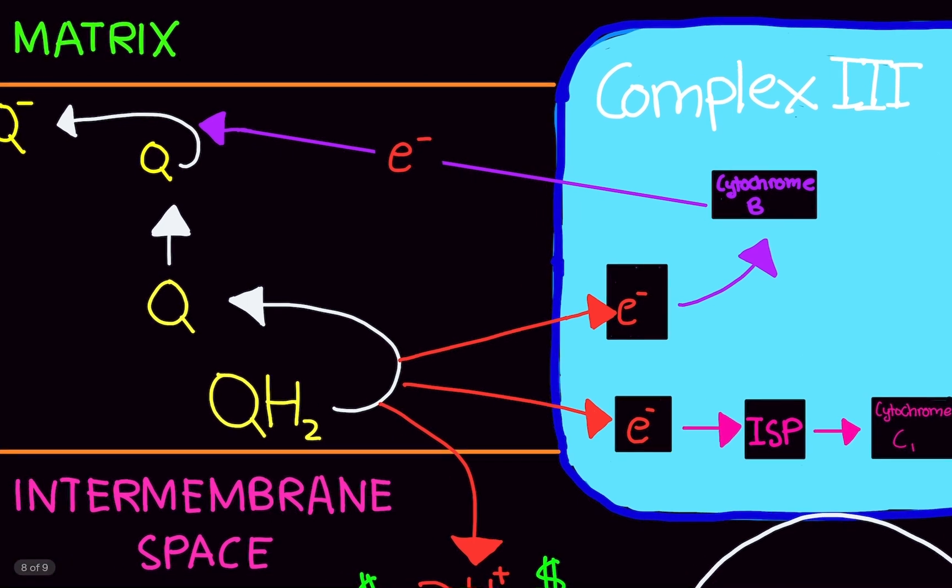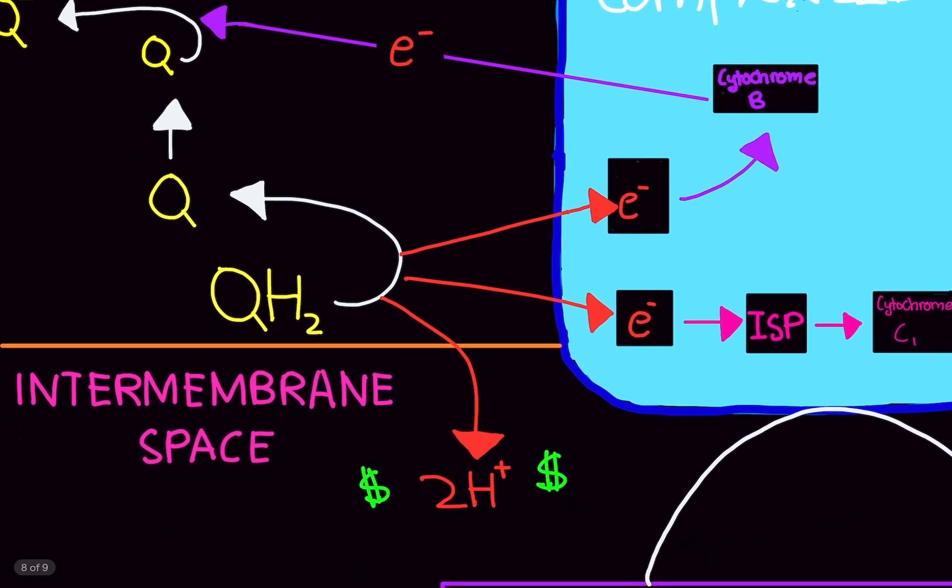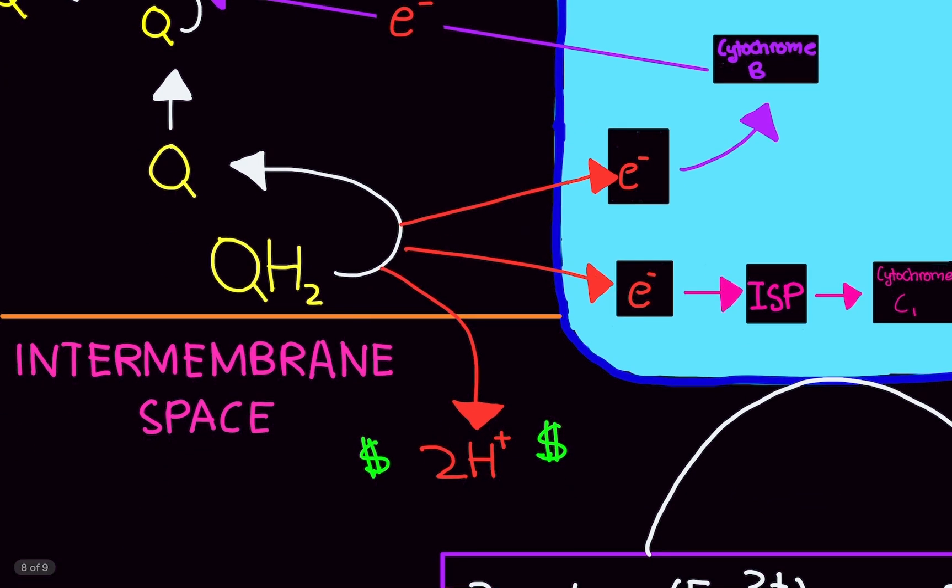Now, here's what's kind of odd. So, what's going to happen is the ubiquinol is going to give the electrons away. Well, notice it has two protons. Well, what's going to happen is the two protons are actually going to come off and enter the intermembrane space, which is good. This is our currency. We need this for the ATPase pump that's to come, to generate ATP. Remember, the goal, the whole goal of the electron transport chain is to make sure we have protons in the intermembrane space to power the ATPase pump later on in the electron transport chain.